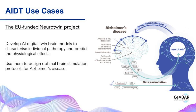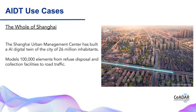Some truly groundbreaking AI digital twins have been developed in recent years. For example, the EU funded a neural twin project to simulate specific human brains in order to predict the best treatment for conditions such as Alzheimer's and epilepsy. Another innovative example is the AI digital twin of the city of Shanghai, which models 100,000 elements from refuse disposal to e-bike charging infrastructure and road traffic, helping authorities to plan and react in the face of COVID-19, and simulating the effects of natural disasters such as flooding.